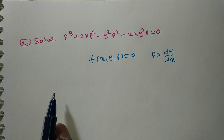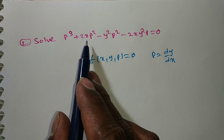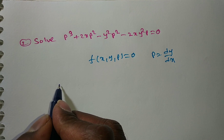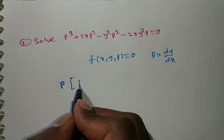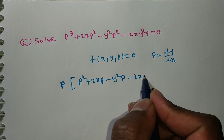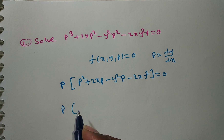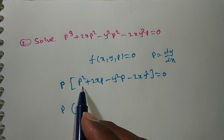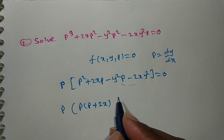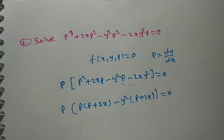We check solvability for p. All terms contain p, so take p as common: p times (p squared plus 2xp minus y squared·p minus 2xy squared) equals zero. Grouping the inner expression: p is common from the first two terms giving p plus 2x; minus y squared is common from the last two, also giving p plus 2x.